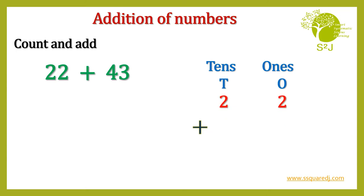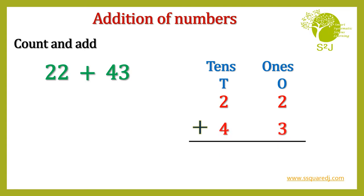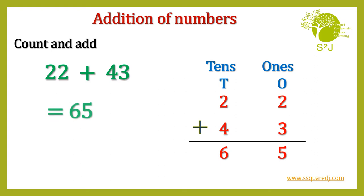Let's arrange 43. 3 in 1's place and 4 in 10's place. Let's add them. 2 plus 3 is 5 and 2 plus 4 is 6. So 65. So 22 plus 43 is 65.